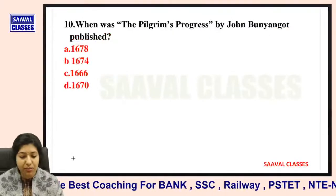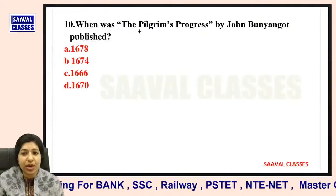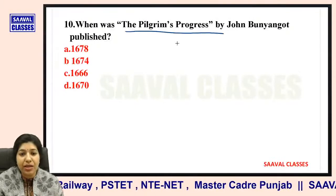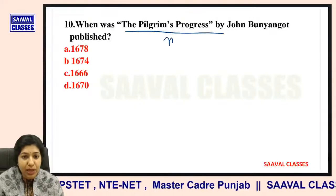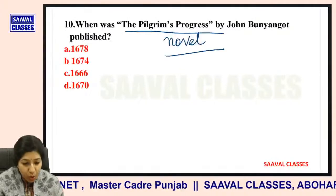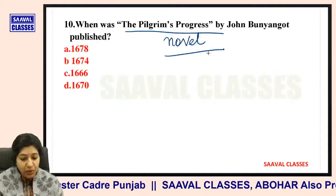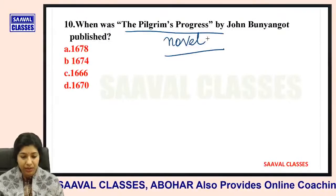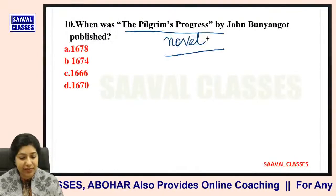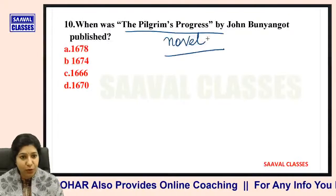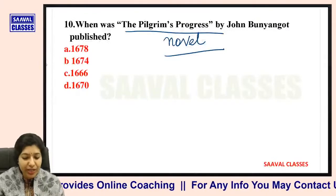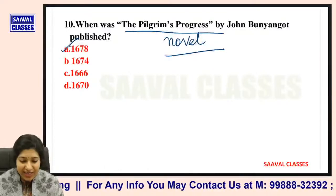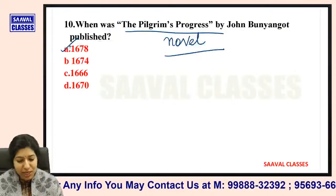Question number ten: When was The Pilgrim's Progress by John Bunyan published? It's called a novel. Was it 1678, 1674, 1666, or 1670? The correct answer is 1678. Bilkul sahih answer mila mujhe aap sabhi ki taraf se.